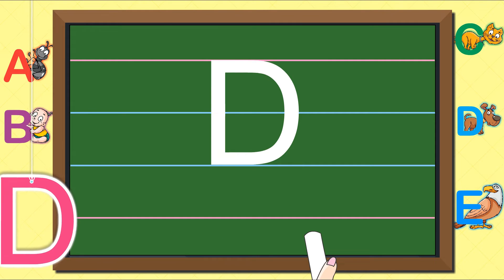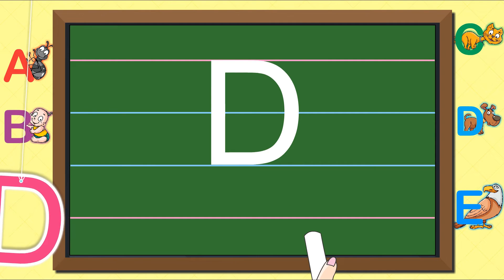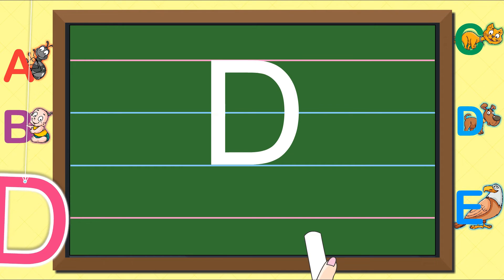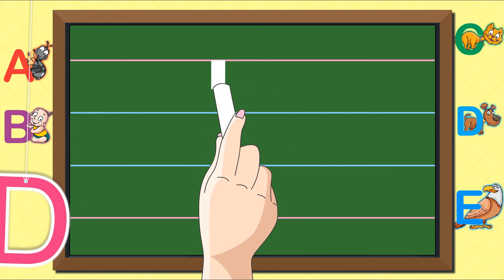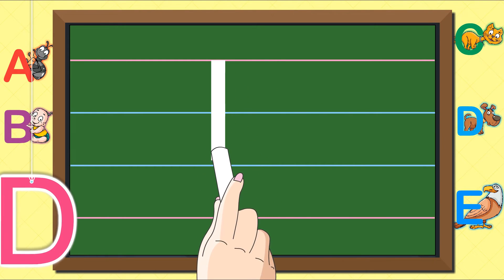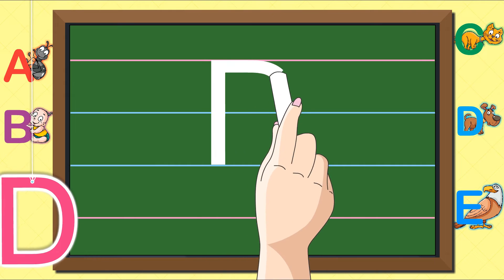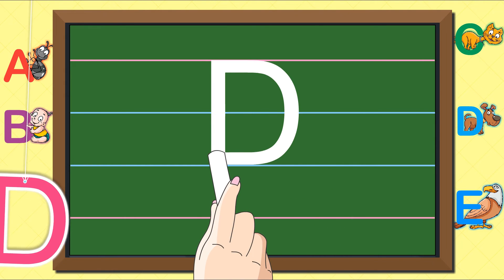Let us look at it once more. One standing line down and a curve makes letter D.